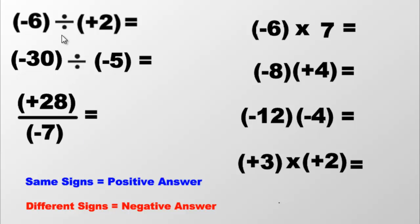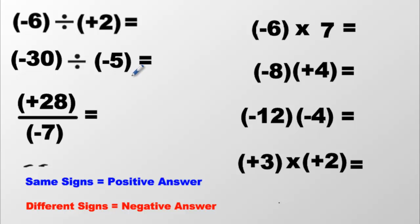If the signs are the same, the answer will always be positive. What does that mean? If the signs are both negative, the answer will be positive. Think of it this way: two negatives are like two bad guys hanging out with each other. They understand each other very well and they're happy to be with each other, so the mood is positive. Two good guys hanging out with each other — again, they get along very well and the mood is very positive.